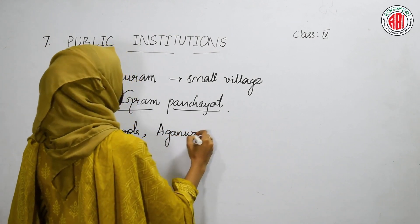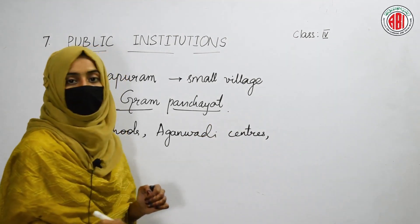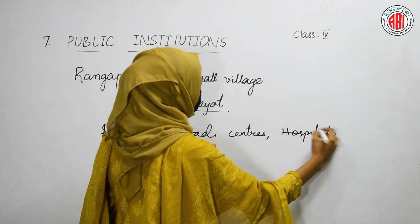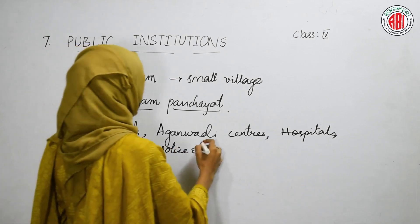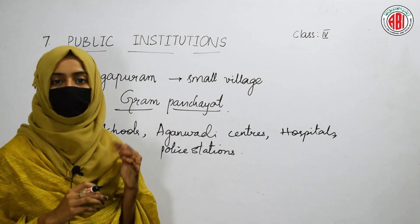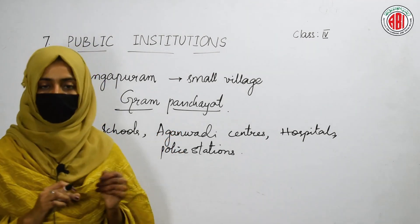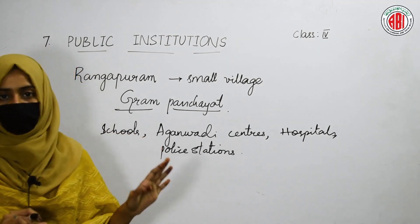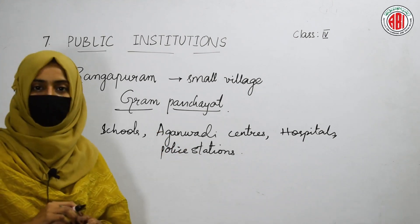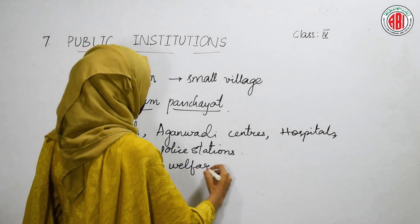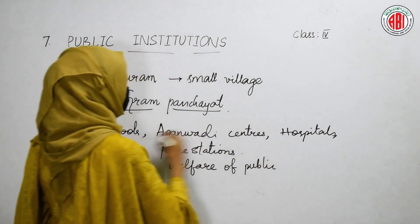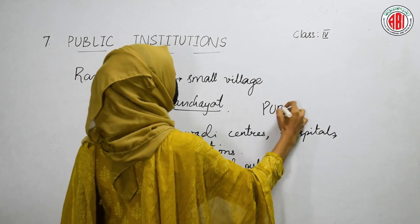Institutions like schools, anganwadi centers, hospitals, and police stations are the places that look after the problems of different people living in that village. These problems can be solved when people reach these institutions. The institutions made for the welfare of the public — these are made by the government for the welfare of the public — we call these institutions 'public institutions.'